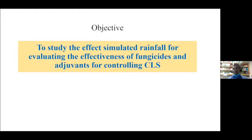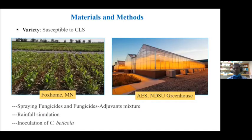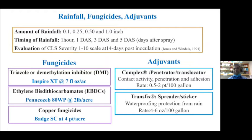We set objectives to study the effect of simulated rainfall for evaluating the effectiveness of fungicide and adjuvants for controlling Cercospora leaf spot. The research was conducted both at an NDSU greenhouse and in the field at Foxholm, Minnesota. We used a sugar beet variety highly susceptible to Cercospora beticola. We used different amounts of rainfall: 0.1 inch, 0.25 inch, 0.5 inch, and 1 inch. Rainfall was simulated artificially using a spray booth chamber at the NDSU greenhouse at one hour after fungicide spray, one day, three days, and five days. We evaluated CLS severity using a 1 to 10 scale after 14 days post-inoculation of Cercospora beticola.